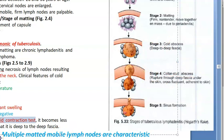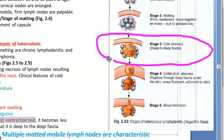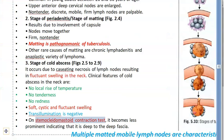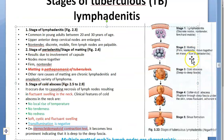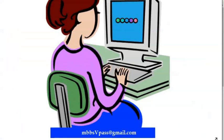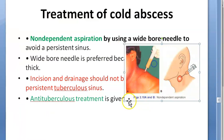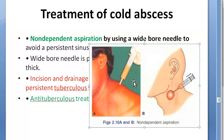Cold abscess is a very important topic. For treatment of cold abscess, non-dependent aspiration is done — going against gravity — because if you do incision and drainage, a persistent sinus can form. So non-dependent aspiration is preferred, and then whatever the cause is, appropriate treatment is given.